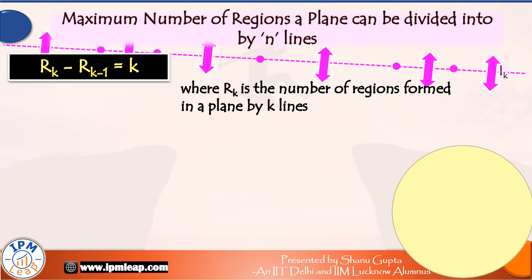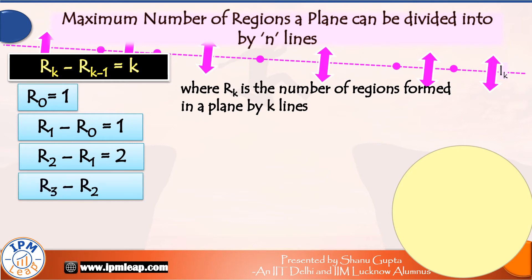We already know that R0, the initial number of regions, is equal to 1. R1 minus R0 is also equal to 1 because the first line adds one region to our plane. R2 minus R1 is equal to 2 because the second line adds two regions to our plane. R3 minus R2 is equal to 3 because the third line adds three regions to our plane and so on.